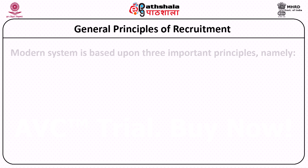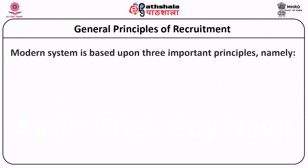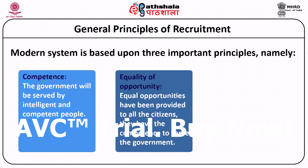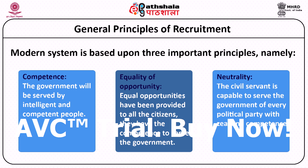The modern system of recruitment is based on three broad principles: competence, neutrality, and equality of opportunity. Competence means that civil servants will serve the government in an intelligent and efficient manner. Neutrality means that civil servants will serve any political party without being influenced by its ideologies. And equality of opportunity means that all those having the capability to serve the government have been provided equal opportunities to be recruited.